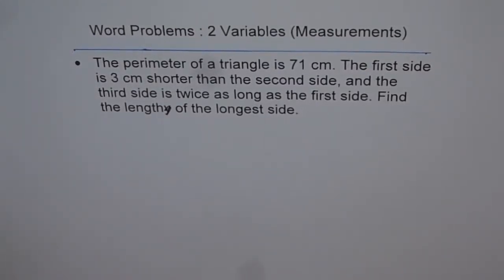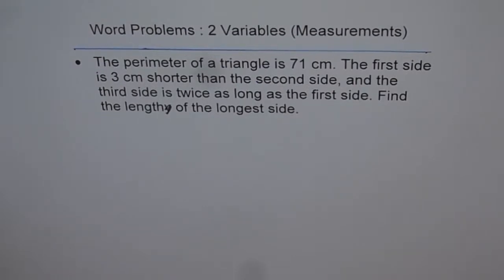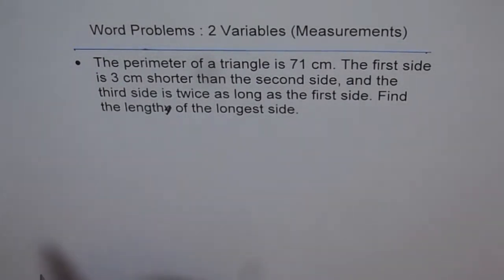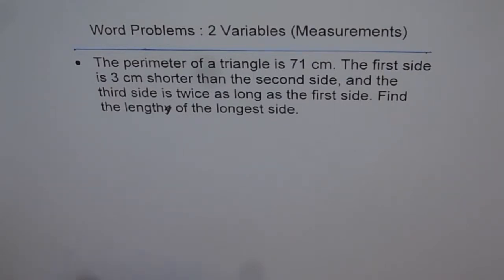Here is a word problem involving the perimeter of a triangle. It says the perimeter of a triangle is 71 cm. The first side is 3 cm shorter than the second side, and the third side is twice as long as the first side. Find the length of the longest side.